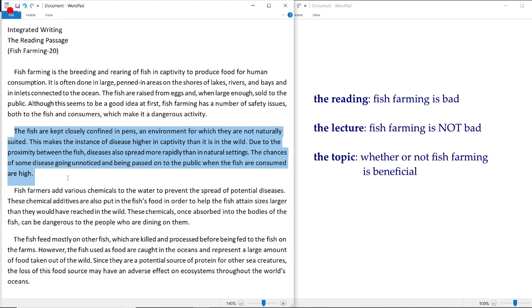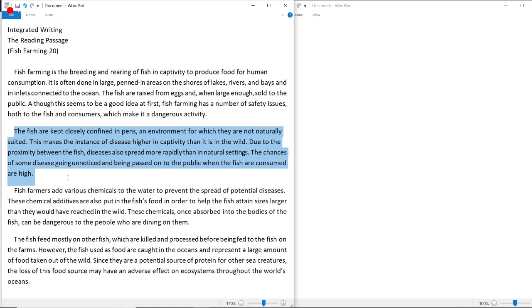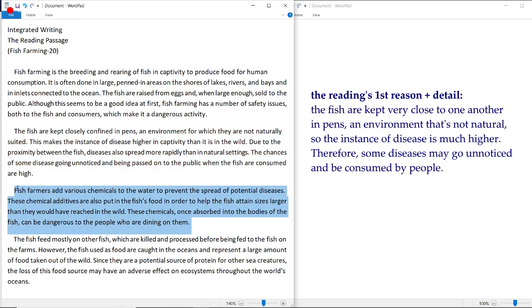So the chances of some disease going unnoticed and being passed on to the public are fairly high. Okay, so the reading's first body paragraph is telling us that since the fish in fish farms are kept in close proximity to one another in unnatural environments, also known as cages, the chances of diseases being spread and also being consumed by the public are fairly high, which is obviously something that's not good.